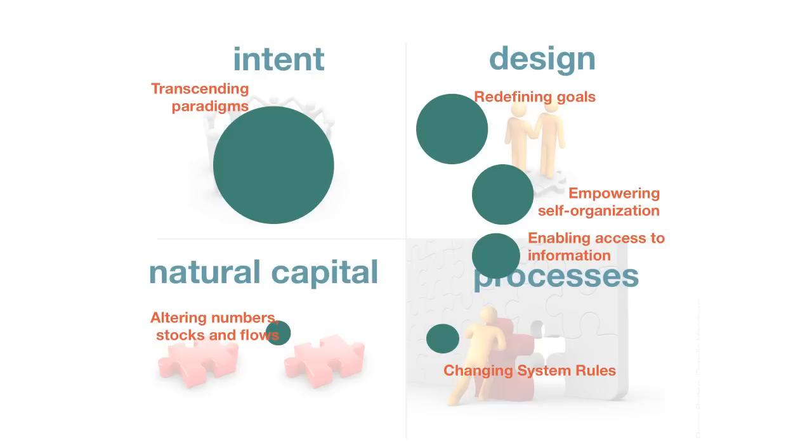So these levels of interventions mapped against Aristotle's model of causality are not equal in their impact. These intervention levels proposed by Donella Meadows have a hierarchy in terms of their impact. In this diagram, the leverage of the impact is represented by the size of the dot.